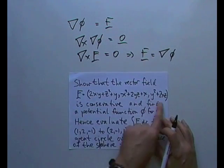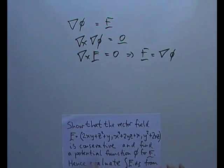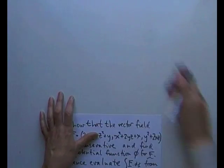So the first part would be to show that this vector here, the curl of this vector is going to equal zero. Right, I need a bit of space for this.